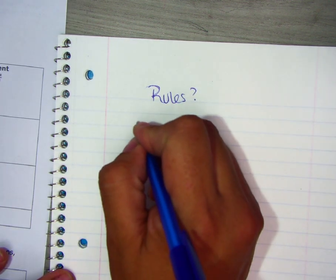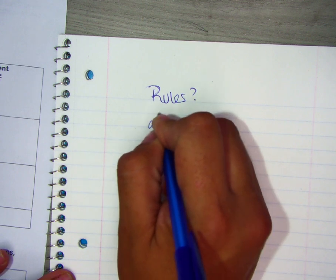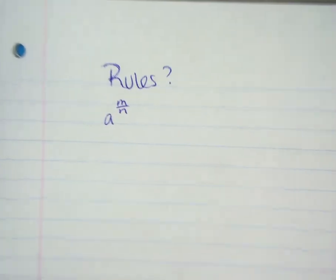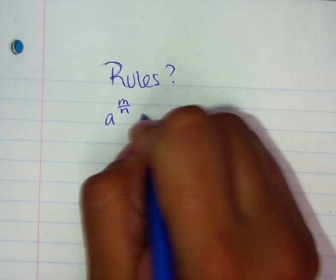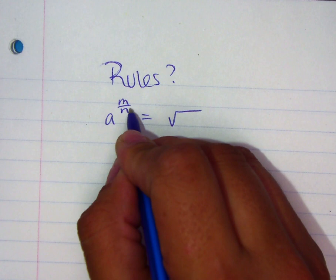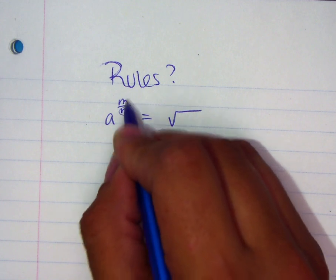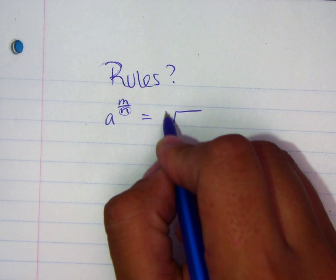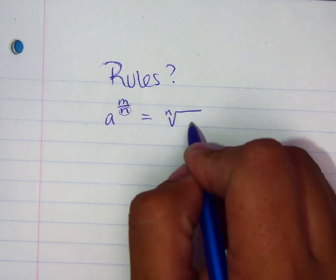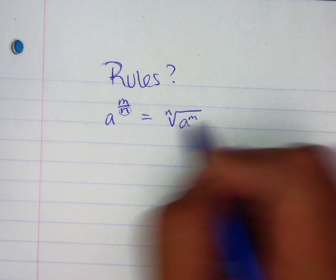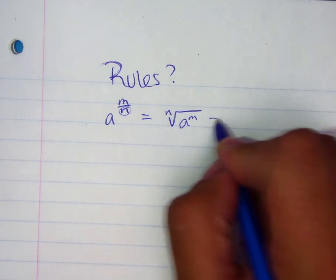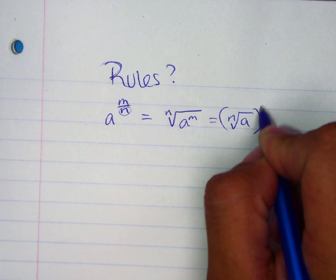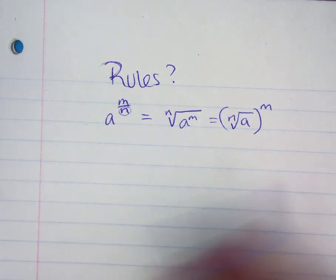One of the rules is converting to a radical. If you have something raised to a fraction exponent, you can rewrite it as a radical. The denominator of that fraction exponent becomes the root, and the numerator goes either on the inside with the base, or it could also be on the outside. So those are two options — that's one rule.